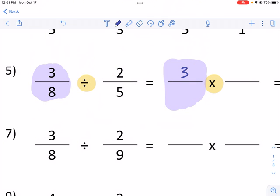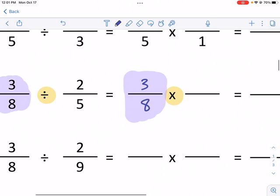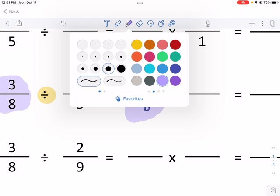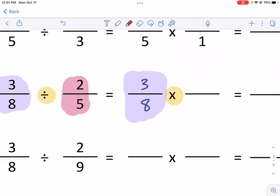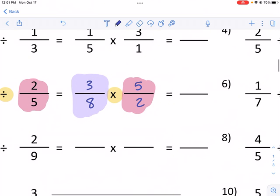So I'm going to keep this the same. 3 over 8 times. I change it from divide into multiplication. And I am going to flip this guy. So instead of 2 over 5, I need to change this to be flipped, which is 5 over 2. Now I just do top times top, bottom times bottom. 3 times 5 is 15. 8 times 2 is 16. And I'm done.